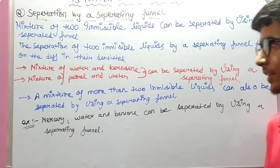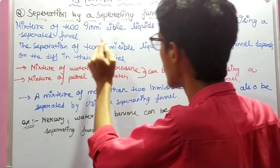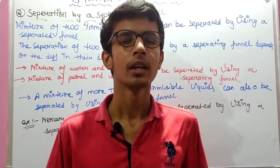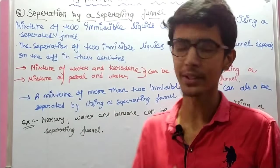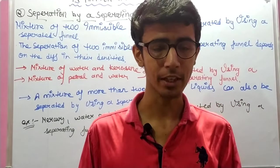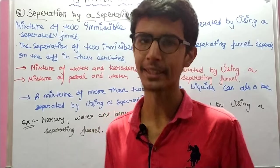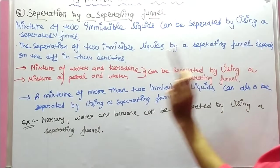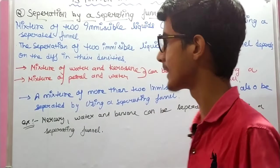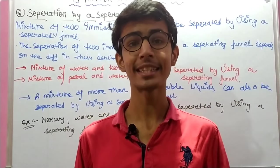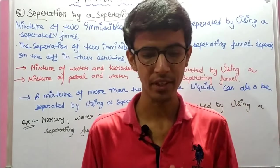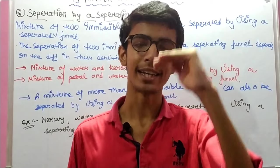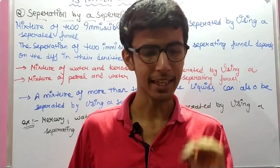The mixture of two immiscible liquids can be separated by using a separating funnel. The separation of two immiscible liquids by the separating funnel depends on the difference in their densities. The liquid with lower density forms the upper layer and the liquid with higher density forms the lower layer.